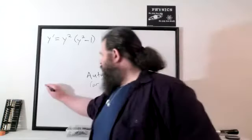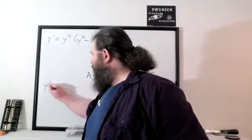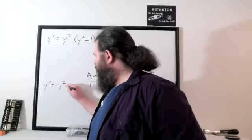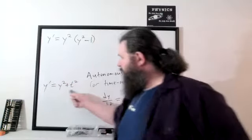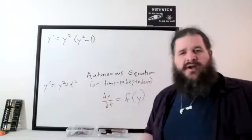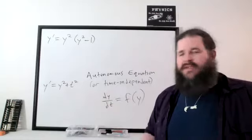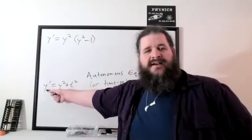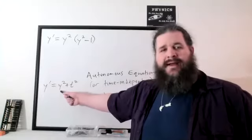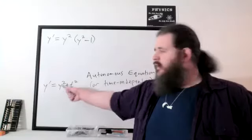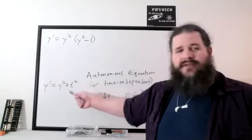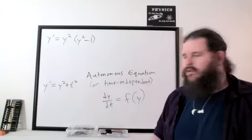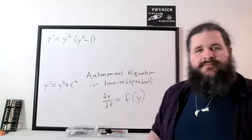As opposed to, for instance, y prime equals y squared plus t squared. This equation would not be autonomous because it does depend on time. The rate of change of y depends not only on the value of y right now, but also on what time it is, what the input is. So this would be non-autonomous.